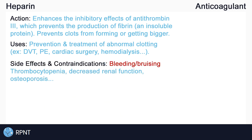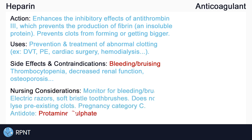Heparin reduces both normal and abnormal blood clotting, meaning it may take longer for regular cuts or injuries to heal. Heparin increases the risk for internal and external bleeding and bruising. It is contraindicated in clients who have uncontrolled active bleeding or thrombocytopenia — also known as low platelet count — due to the increased risk for hemorrhage. Other side effects include decreased renal function and osteoporosis with long-term therapy. Always assess and monitor for side effects of heparin, mainly bleeding.